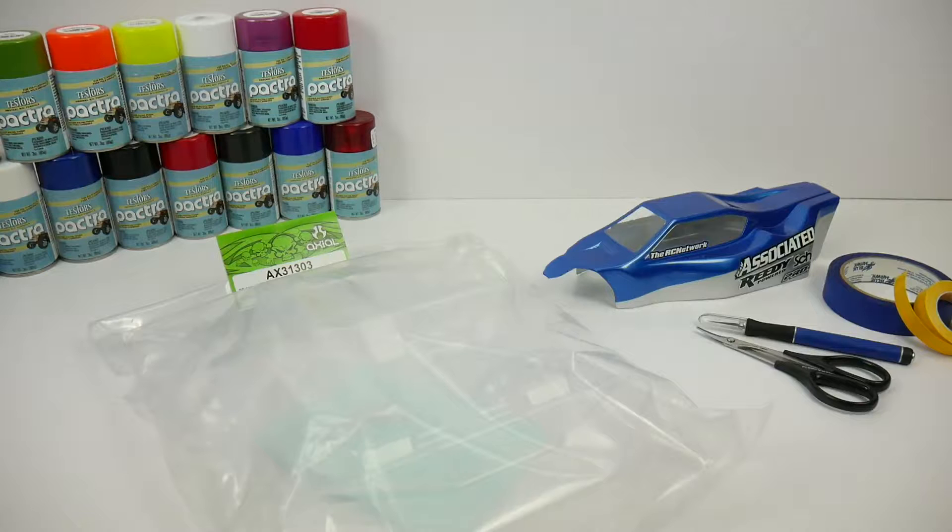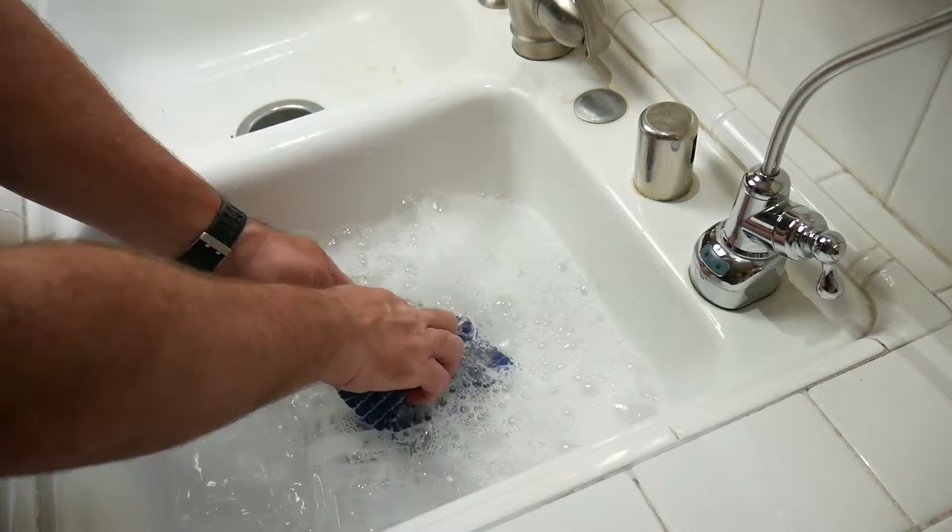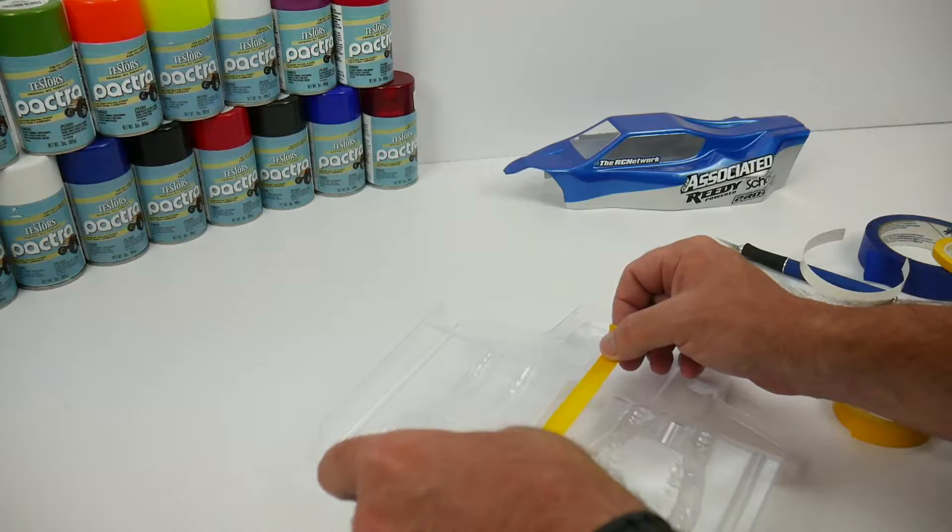So in this video, a couple of things we are going to be going over: how to pre-cut the body, how to wash the body appropriately to get all of the mold release agent off the underside of it, and also we're going to go over different masking techniques to just get your body ready for paint.